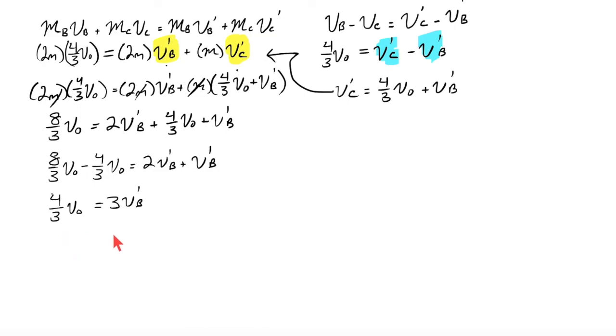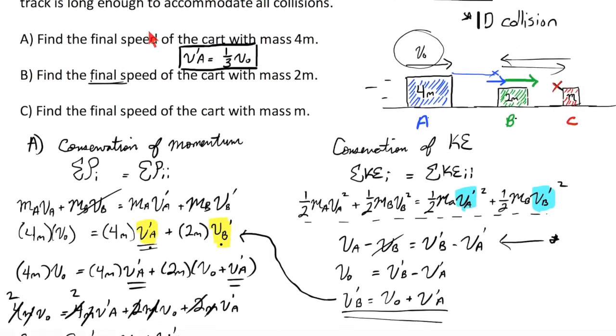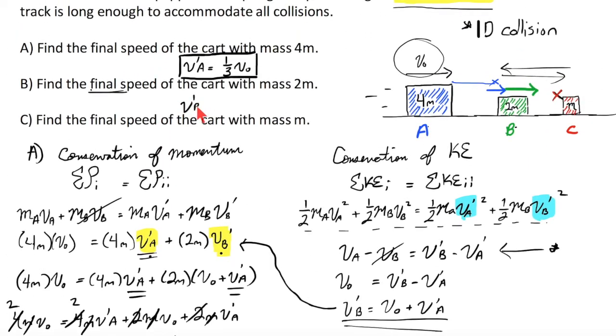And getting to the end of this, V prime of object B, 4 ninths, V zero. All right. There's an answer. Almost done. Let me go ahead and put this up here. V prime of B, 4 ninths of V zero. Finally,